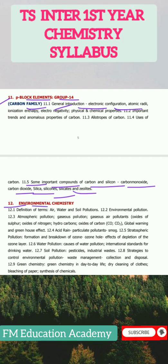The twelfth chapter is Environmental Chemistry, covering definition of terms, air, water and soil pollution, from 12.2 Environmental Pollution and Atmospheric Pollution through to 12.9 Green Chemistry — green chemistry in day-to-day life, dry cleaning of clothes, bleaching of paper, and synthesis of chemicals.